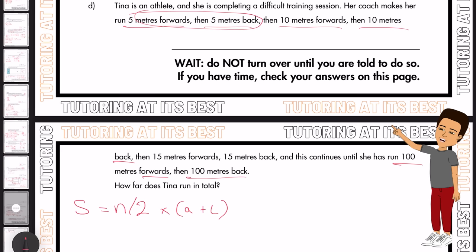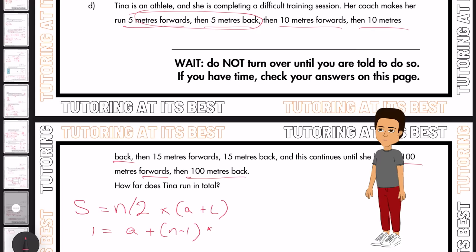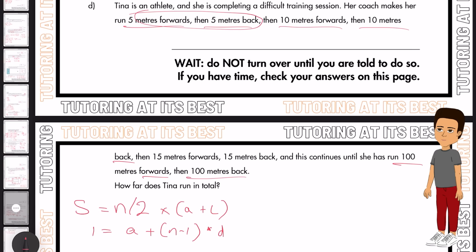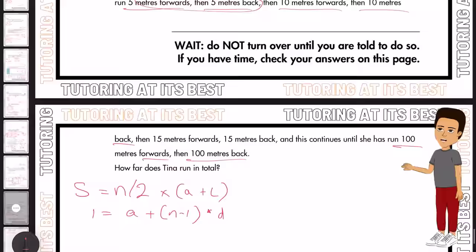So in this case, our first term is 5, and the last term is 100. But now we need to find out the number of terms. So we're going to use a formula to find the number of terms. So we'll have L, which equals A plus N minus 1 multiplied by D, where D is our difference. And in this case, we can say D is 5 meters.